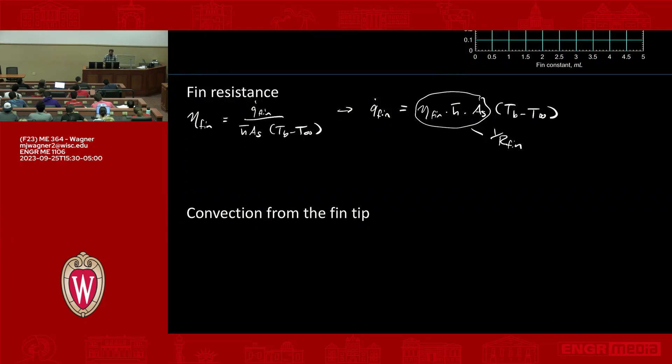So resistance of the fin then is this. It is R fin is equal to 1 over eta fin h bar times AS. Again, for your problem, it's not just h bar. Also radiation. And then we can also rewrite that as 1 over eta fin times h bar times perimeter times L for this problem. Eta fin being a number less than 1 means that the resistance goes up. The less efficient your fin is, the more the resistance goes up. I think that's good enough. We'll cover fin arrays and some concepts there next time. Thanks.